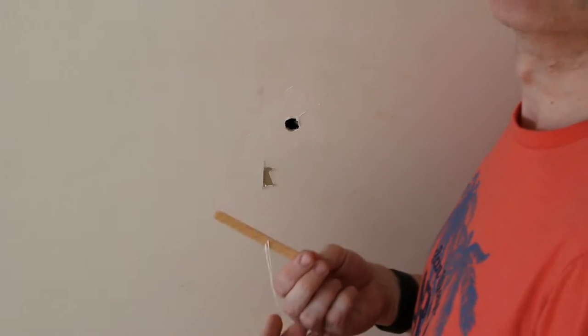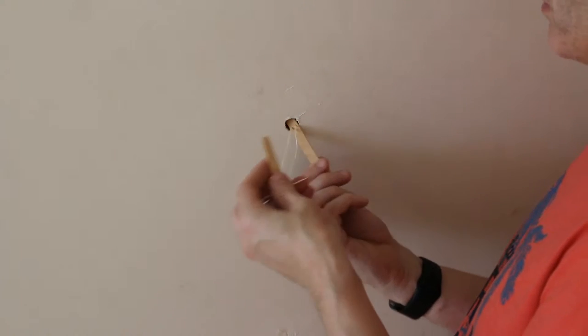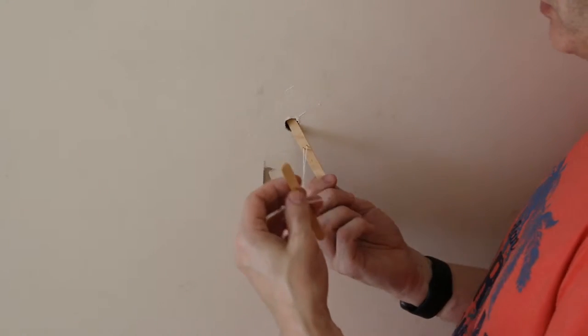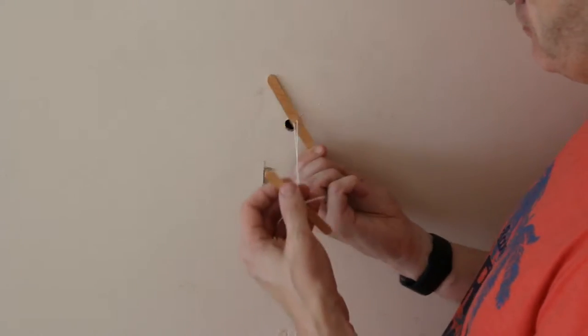I'm just going to thread some string through the two holes. So now the idea is I'll just put that through the hole with some glue on the end of the stick and pull through and tie that off.